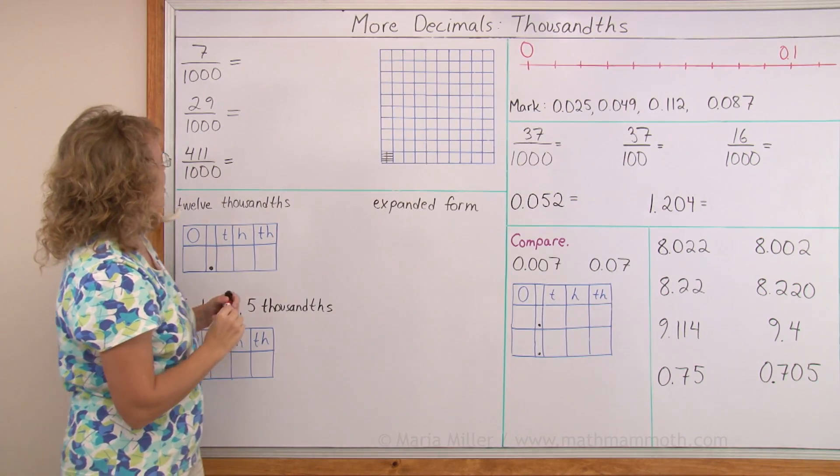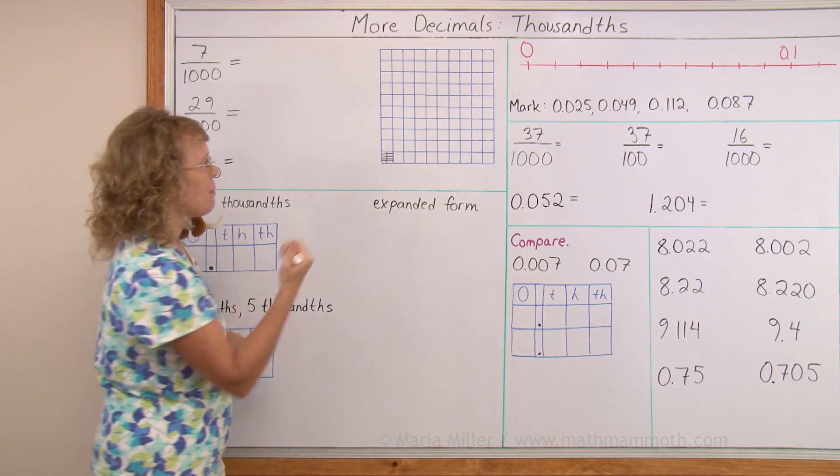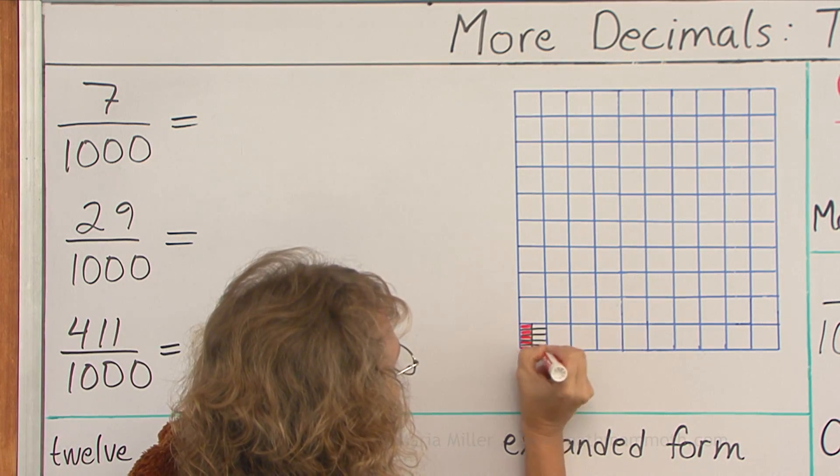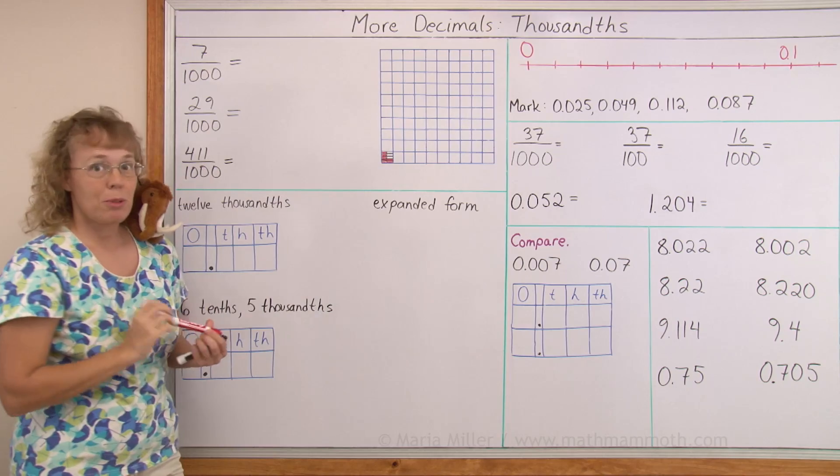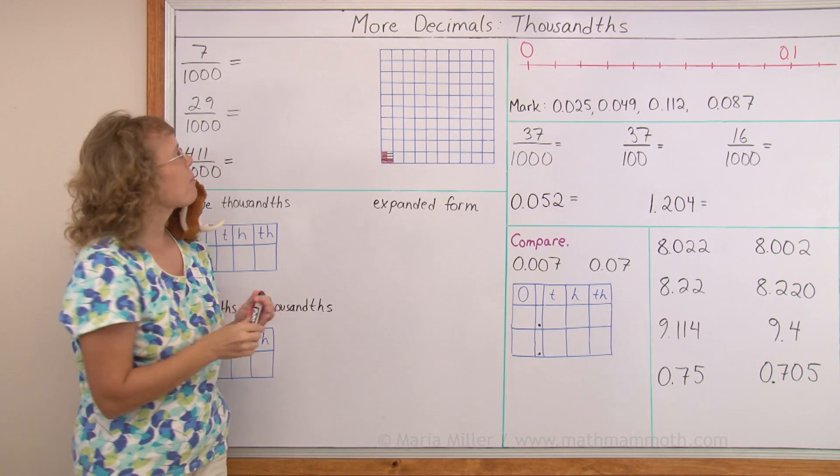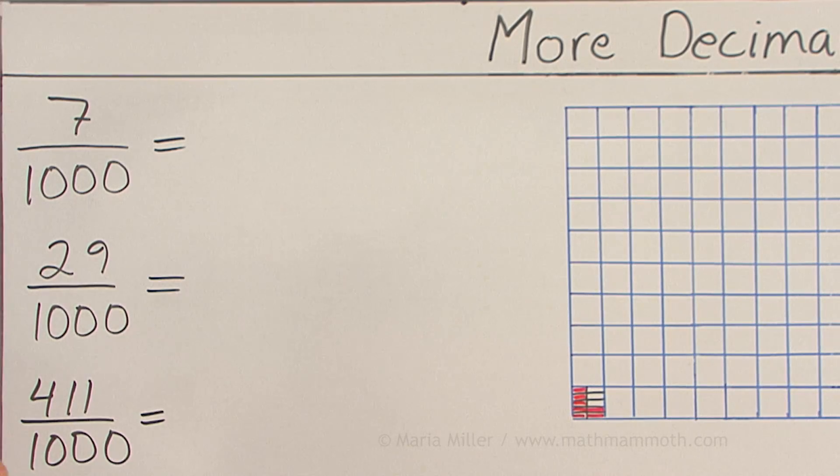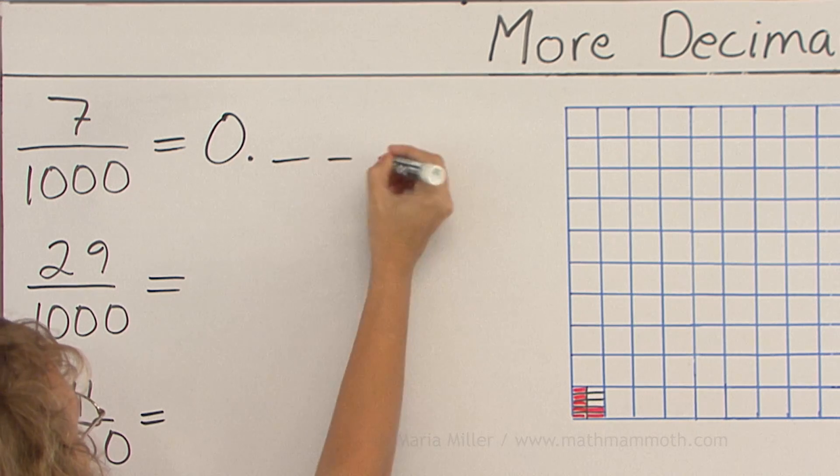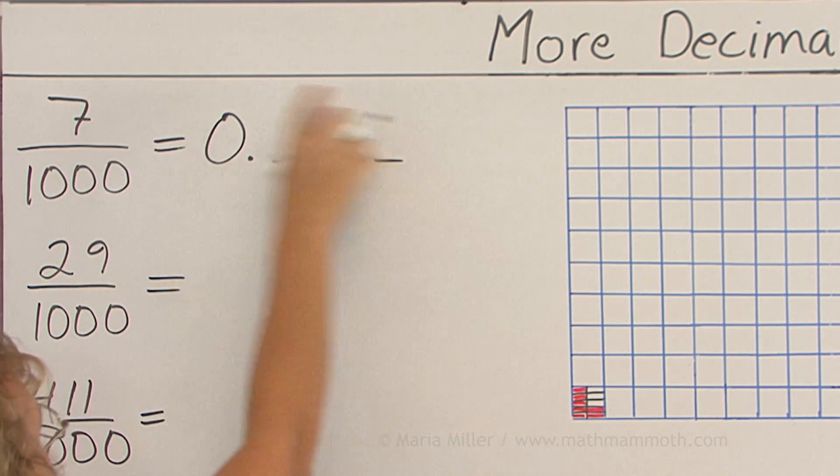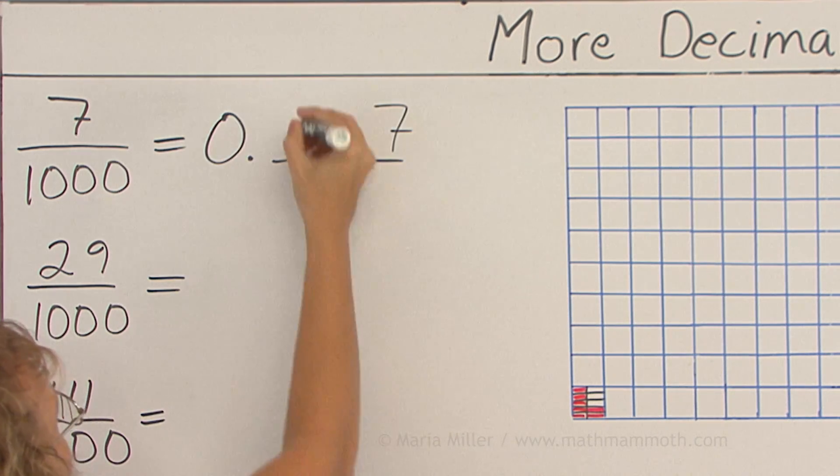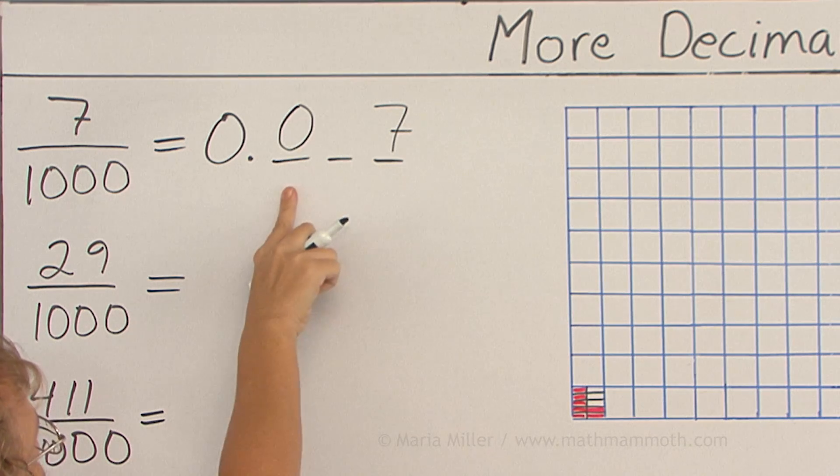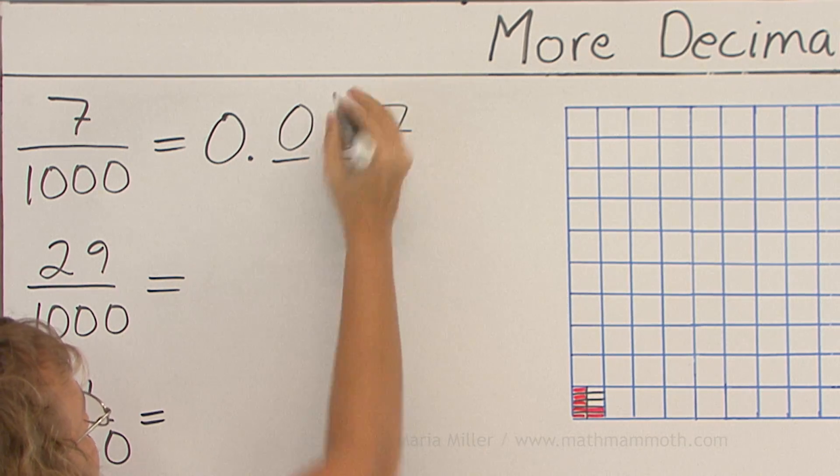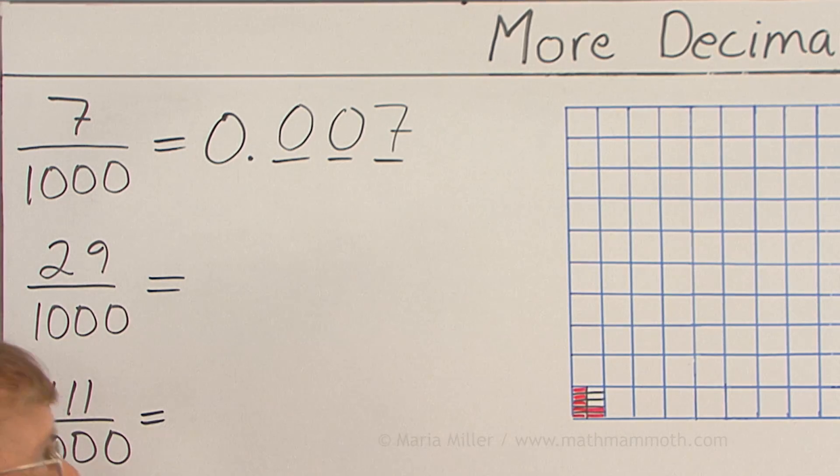Over here I have seven thousandths so let me color that. And then we are going to write it as a decimal. To write this as a decimal we are going to need three decimal digits. It's going to be 0.007 and this seven goes here. This one here is the tenths place, this one is the hundredths place and this one is the thousandths place.